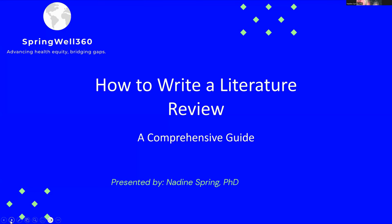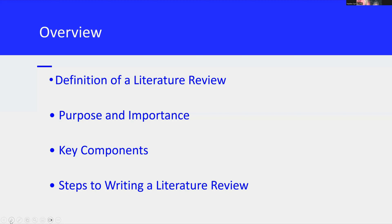Let's go ahead and get started. We'll outline what we'll be covering in today's presentation. First, I'll define what a literature review is and why it's so important in academic research. Then I'll discuss its purpose and importance, highlighting how it contributes to your overall research project. Next, I'll break down the key components of a literature review, and finally we'll walk through the steps involved in writing one, providing you with a clear roadmap.